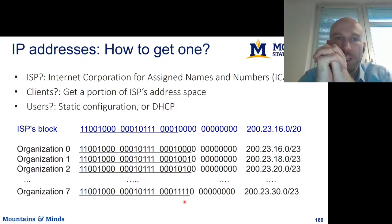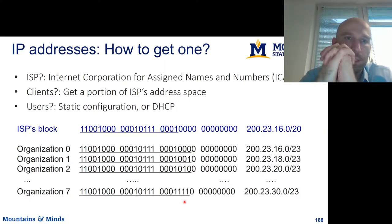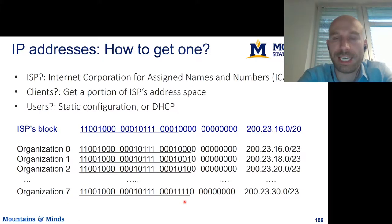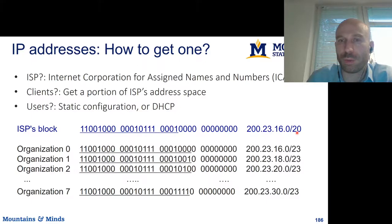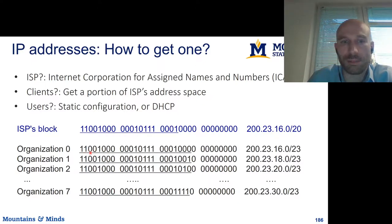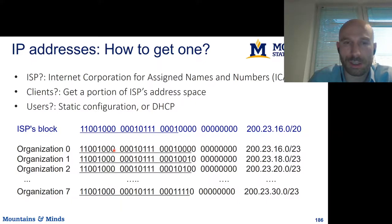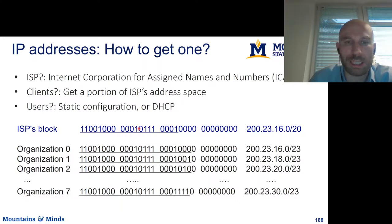Now let's say you want to get an IP address. If you're an ISP, you can get a block from ICANN — the Internet Corporation for Assigned Names and Numbers — such as a /20 block. Then if you're a client of that ISP, you can get some set of IP addresses. For example, organization 0 might get the address space 200.23.16.0/23. The ISP could assign multiple /23 blocks to different organizations.